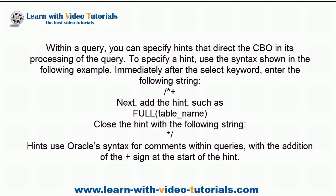Within a query, you can specify hints that direct the CBO in its processing of the query. To specify a hint, use the syntax shown in the following example. Immediately after the SELECT keyword, enter the hint string. Add the hint, such as FULL(table_name), and close the hint. Hints use Oracle's syntax for comments within queries, with the addition of the plus sign at the start of the hint.